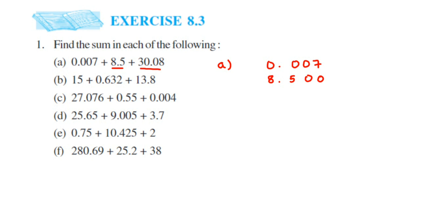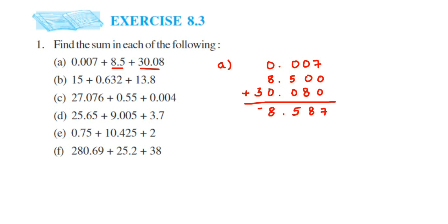The decimal point will come here. 30 is on the left side of the decimal, so it's 0 and 3. On the right side it is 0 and 8, and the spaces which are empty just put 0 there. Now add them up — we'll get 7, then 8, then 5, then the decimal point, then 8 and 3. So the answer is 38.587.